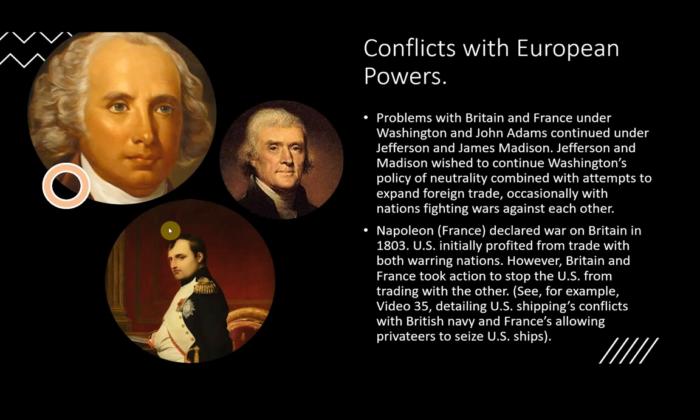Conflicts with European powers: there were problems with Britain and France under Washington and John Adams, and those problems continued under Jefferson and James Madison. Jefferson and Madison wished to continue Washington's policy of neutrality combined with attempts to expand foreign trade, occasionally with nations fighting wars against each other. The U.S., like any country, would basically trade with anybody — which meant occasionally trading with people on both sides of a war.